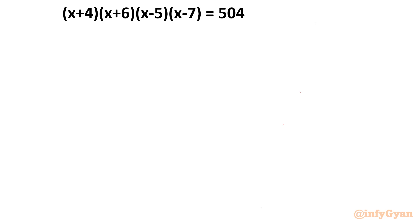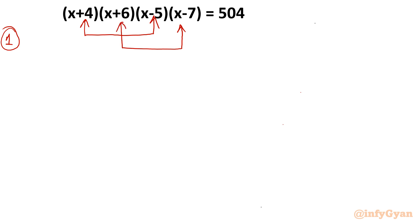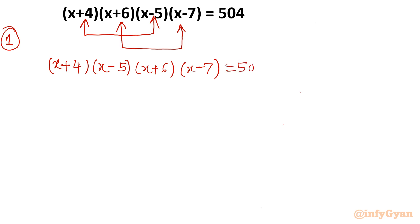For Method 1, I will consider these two brackets together at one place and these two brackets together at another place, and you will see what will happen. The equation is: (x+4)(x-5)(x+6)(x-7) = 504.